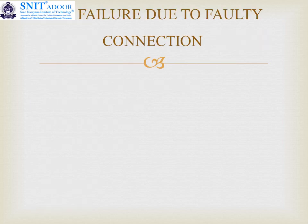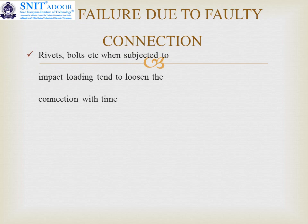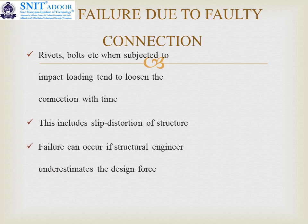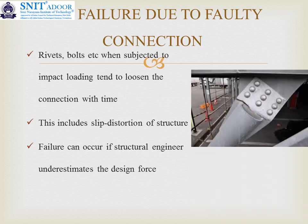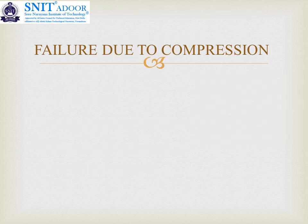Moving on to the first cause — failure due to faulty connection. Rivets, bolts, or welded joints when subjected to impact loading tend to loosen the connection with time. This includes slip, finally leading to the distortion of the structure. Failure can also occur if the structural engineer underestimates the design force — that is a design error. This is an example of failure due to faulty connection.